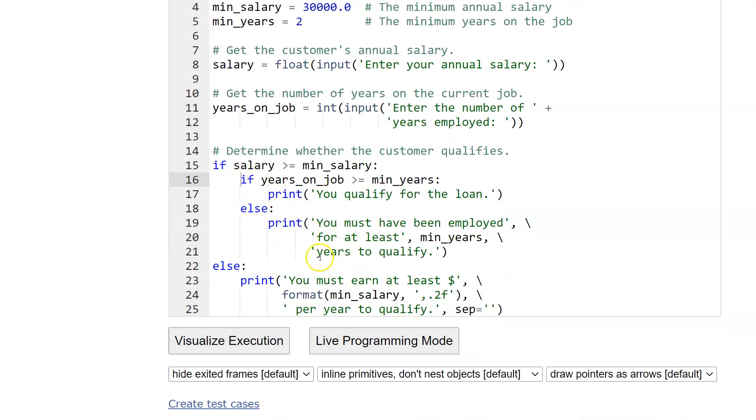So coming down here, here's where we have the heart of the code. Here's our first question. If the salary is greater than or equal to minimum salary. If it's not, notice how we can skip all of this. The computer will do this test. It will say, oh, this isn't going to cut it. And it will just go down here to else and say you must earn that.